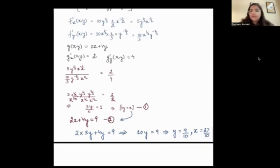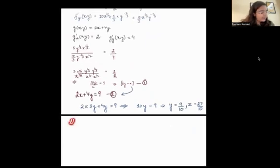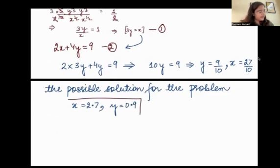I only got one value. I don't know whether it is a maximum or minimum, but this is my only possible option. So the possible solution for the problem is x = 2.7 and y = 0.9.